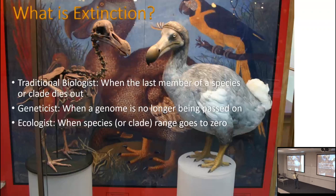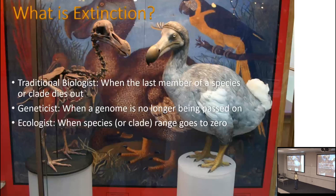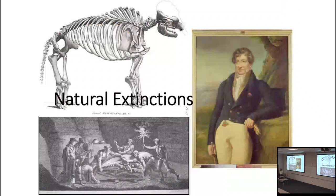They all mean the same thing: there are no more of them. The dodo — shown here with its skeleton and a reconstructed life appearance — is a great exemplar of extinction. They were one of the first animals for which western science recognized that extinction could occur. Dodos were a flightless pigeon on the island of Mauritius. They were fearless animals without many natural predators. When humans arrived, they hunted them, and pigs and rats released on the island ate their eggs — and the dodos disappeared.